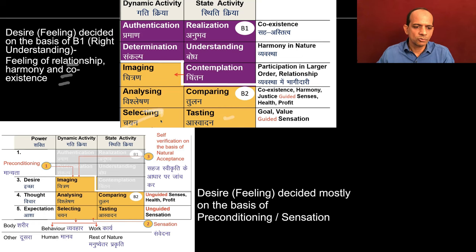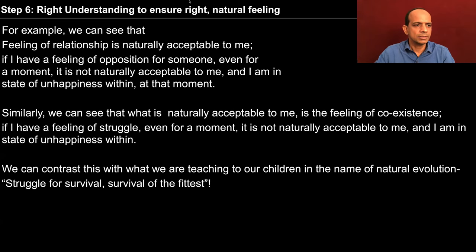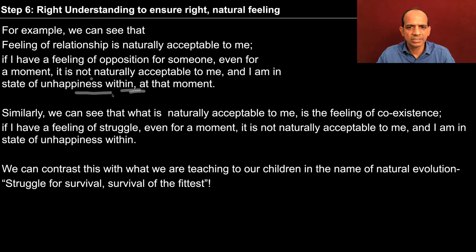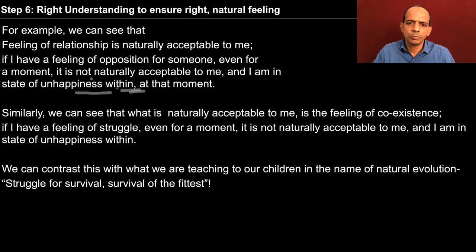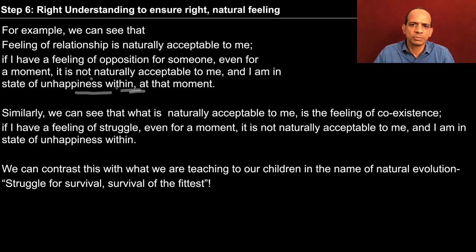So this kind of shift we want to make, and for this we are doing this exercise. Now let us take some examples. We can see that feeling of relationship is naturally acceptable to me. If I have a feeling of opposition for someone, even for a moment, it is not acceptable to me naturally, and I am in a state of unhappiness within at that moment. Now we might be observing the opposition mostly at the level of expression, when somebody is shouting at me or I am shouting at somebody else. So this is something we can observe at the level of expression in our behavior.